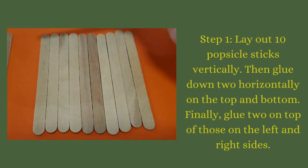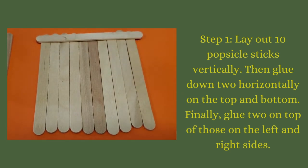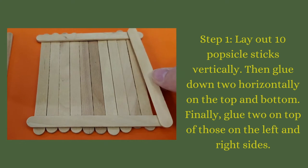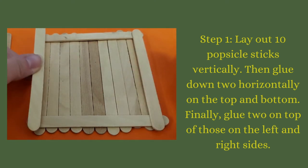For the first step you'll lay out 10 popsicle sticks vertically then glue down two horizontally on the top and bottom. Finally glue two on top of those on the left and right sides. You'll end up with a square.